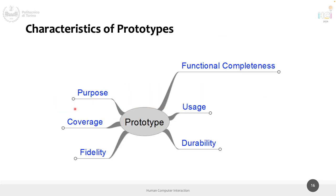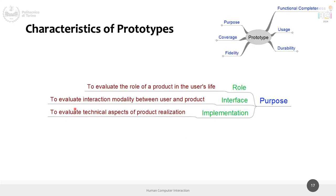Prototypes have characteristics: purpose, coverage, fidelity, durability, usage, and functional completeness. The general purpose of a prototype is to evaluate the role of something in the user's life, to evaluate interaction modalities, and to evaluate specific technical aspects before realizing the product. Think about the Palm Pilot: from the paper prototype you could evaluate weight, how long the battery should last based on usage patterns, and similar technical requirements.